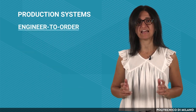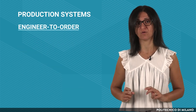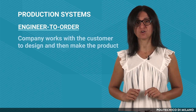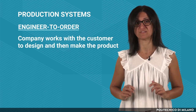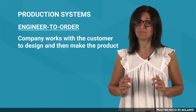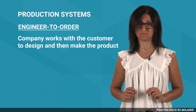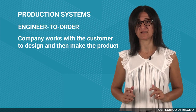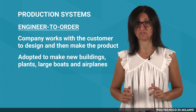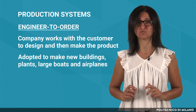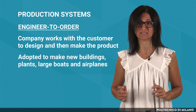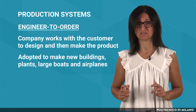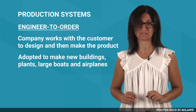In an engineer-to-order production system, the company works with the customer to design and then make the product. Engineer-to-order systems are adopted, for example, to make new buildings, plants, large boats and airplanes.